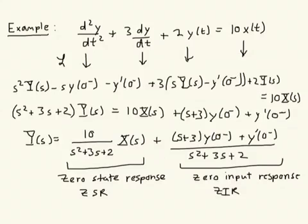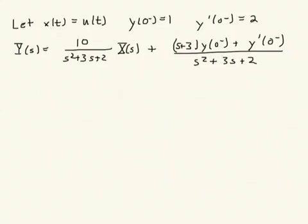It's helpful to split that up into two pieces sometimes, to think about them separately. Now let's take the inverse transform of each of these two terms and get y(t). In order to solve the differential equation, we have to know what the input is. For this problem, we're going to assume that the input is the unit step u(t), and we're going to assume that the initial conditions are y(0⁻) = 1, meaning just before the application of the input, and y'(0⁻) = 2.